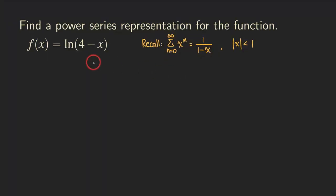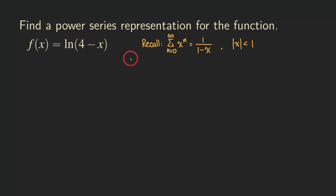Now if we look at the ln function, it doesn't seem like it's related to one over one minus x. But there is actually a connection — we can take the derivative of this ln function and see what's going on. So let's try that.